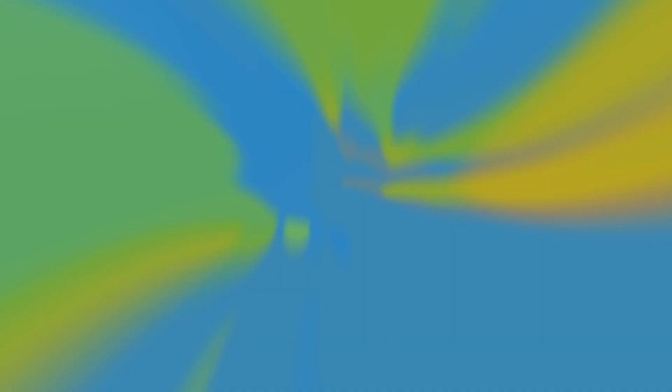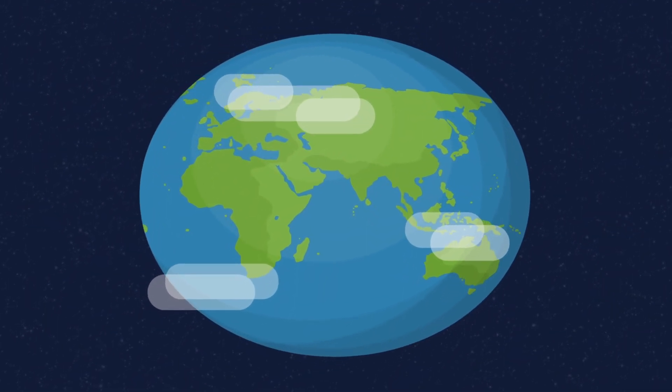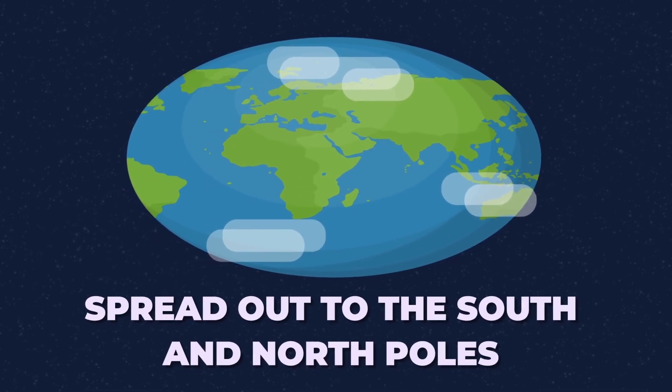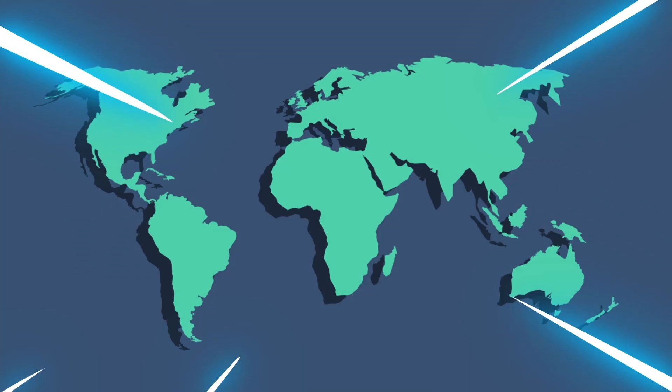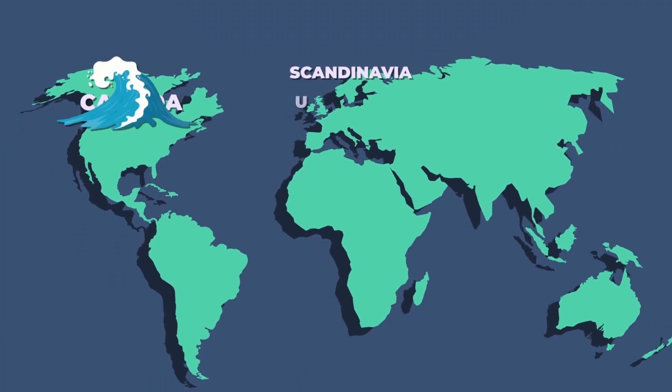You witness the formation of a huge megacontinent around the Earth on the equatorial plain, surrounded by two massive oceans that spread out to the south and north poles. To you, they look like deep blue wormholes. As you keep spinning around the Earth, Canada, Scandinavia, and Great Britain go underwater.